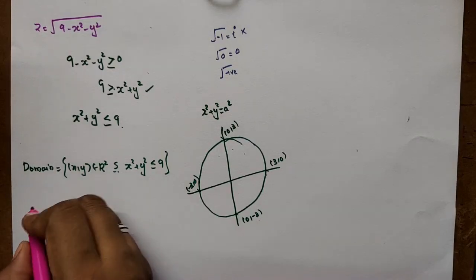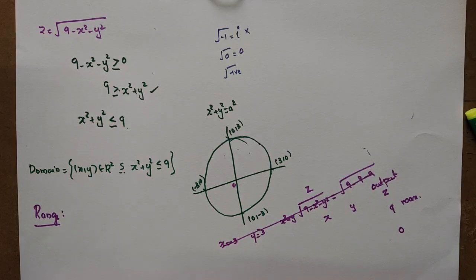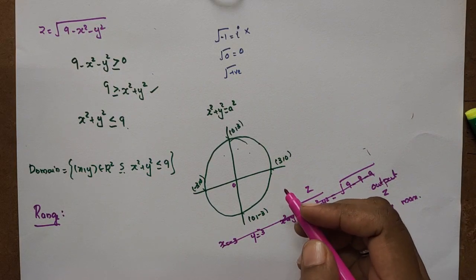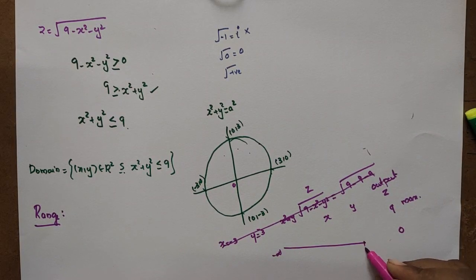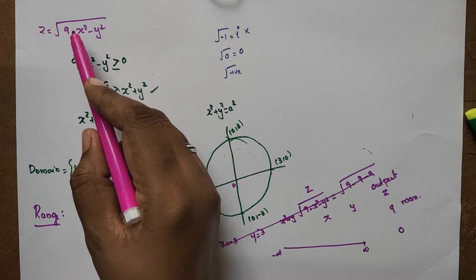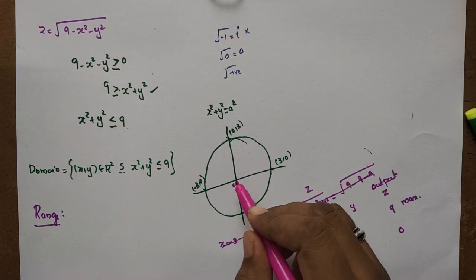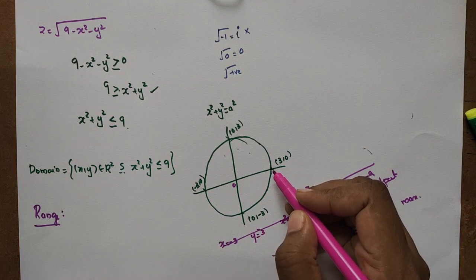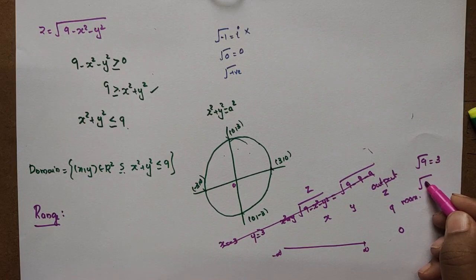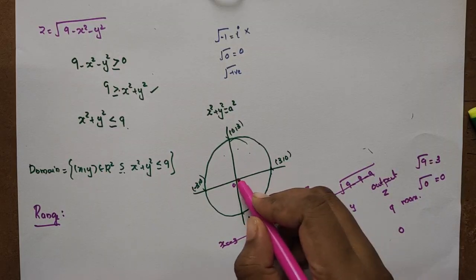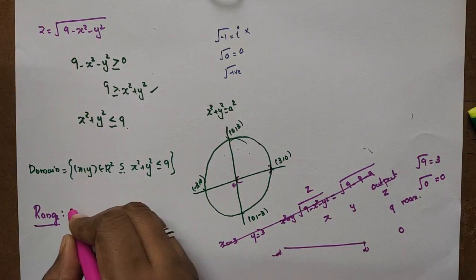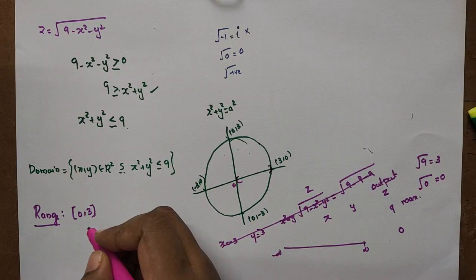For the range: z = √(9 − x² − y²). The maximum value of z occurs when x² + y² = 0 (at the origin), giving √9 = 3. The minimum value occurs when x² + y² = 9 (on the boundary of the circle), giving √0 = 0. So z ranges from 0 to 3.